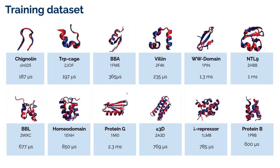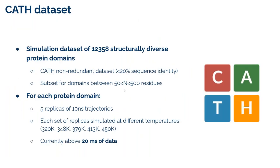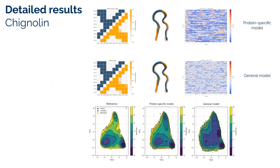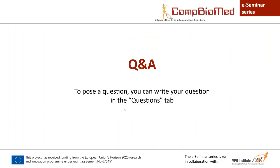Ideally, once you use the CATH dataset, you'll be able to define a general potential transferable to other systems — even systems not seen by the network — computing all this expensive data only once. That is the ideal scenario. We're also working on studying the transferability of our system. But currently, this method is very data-hungry.